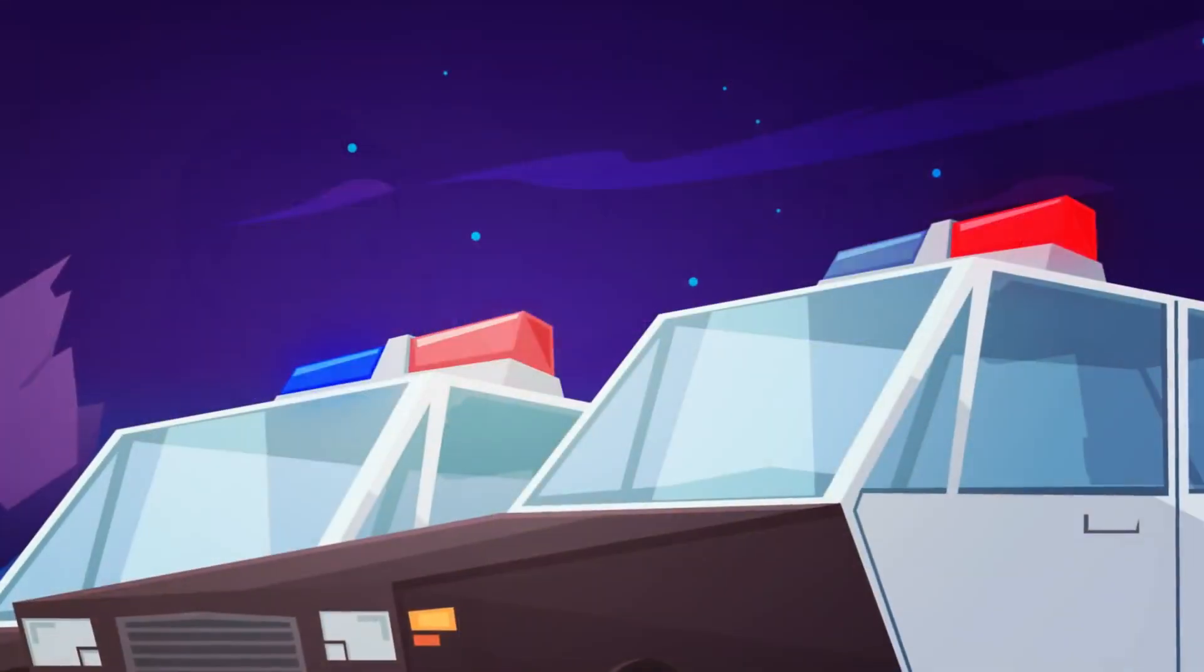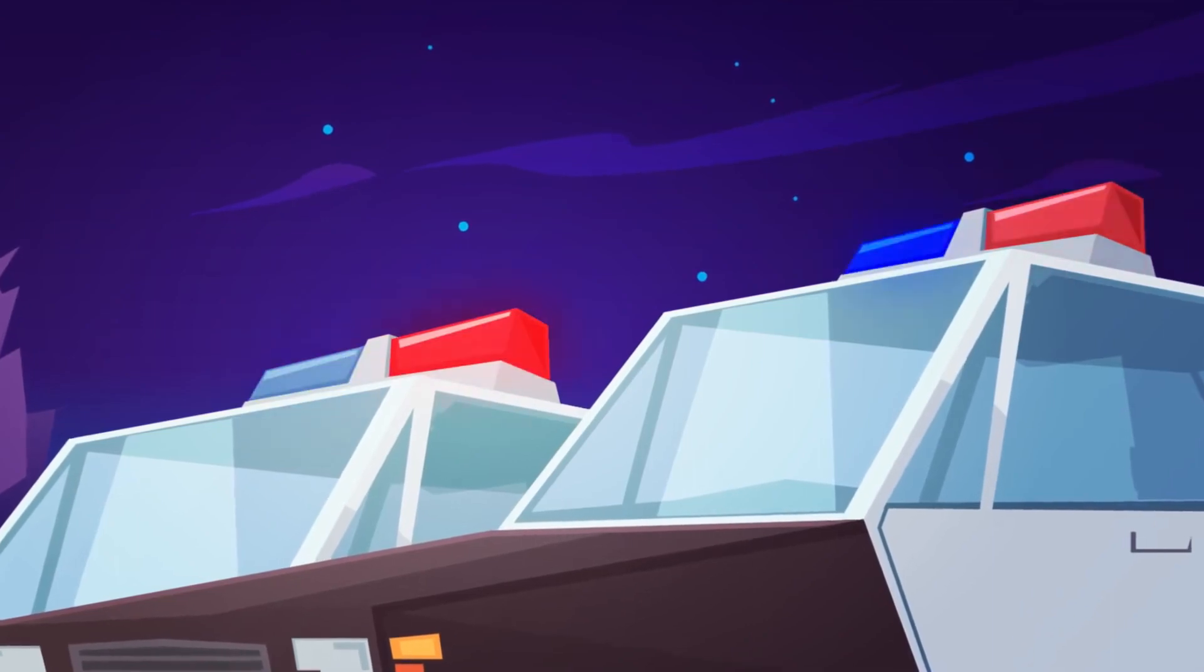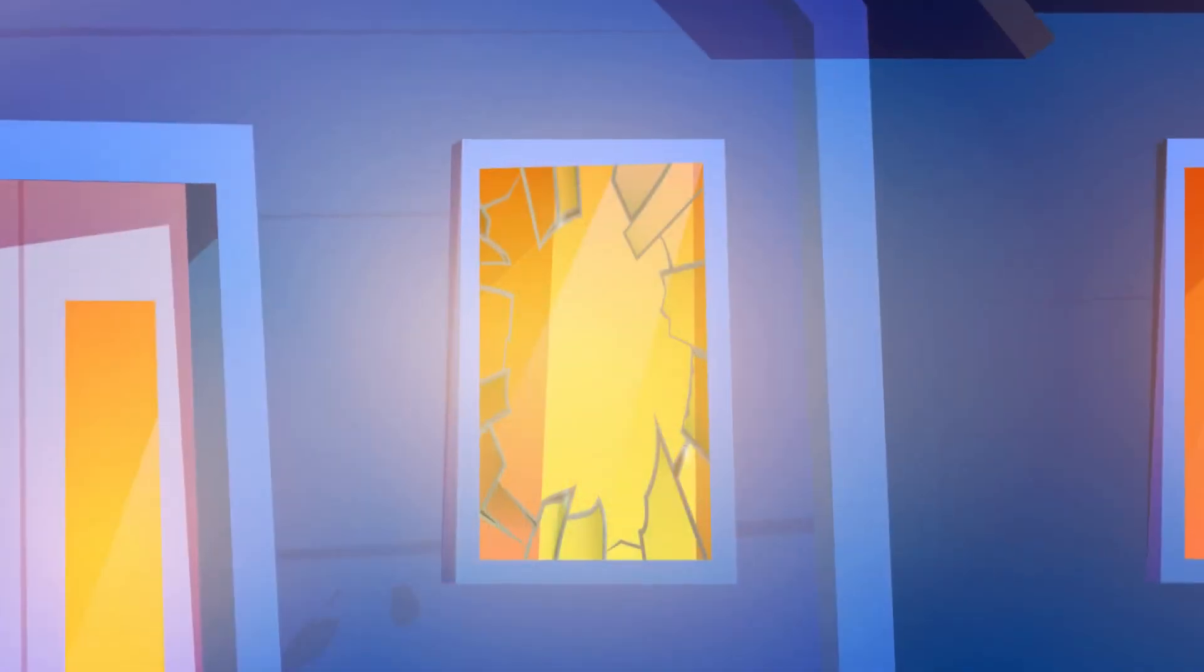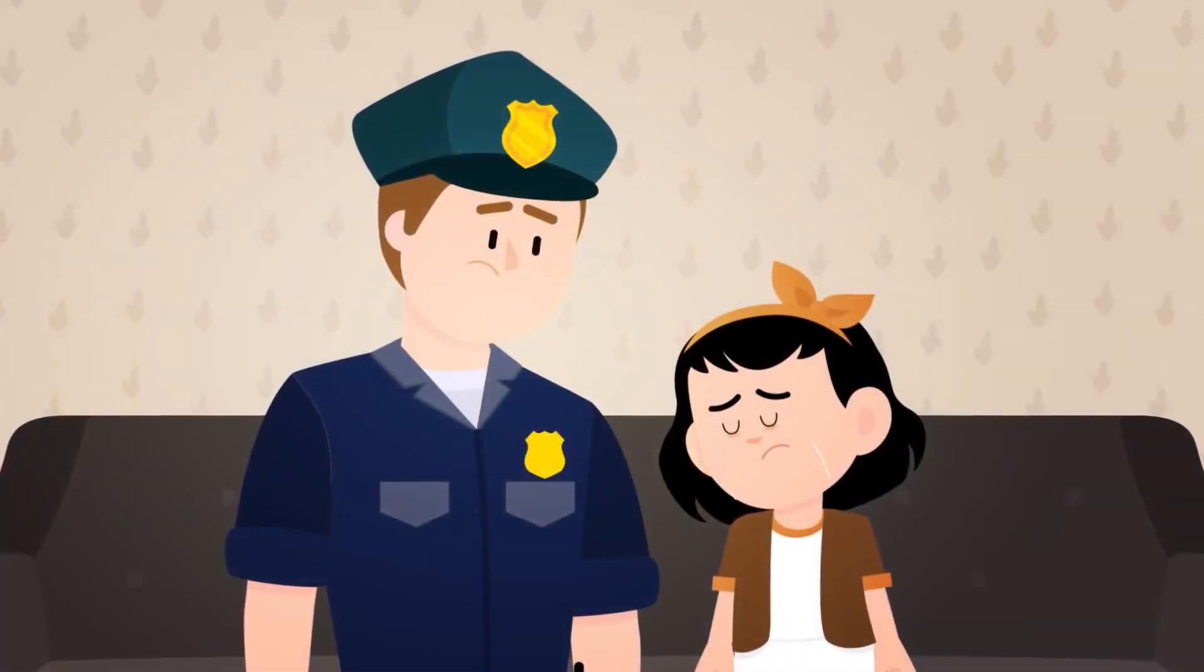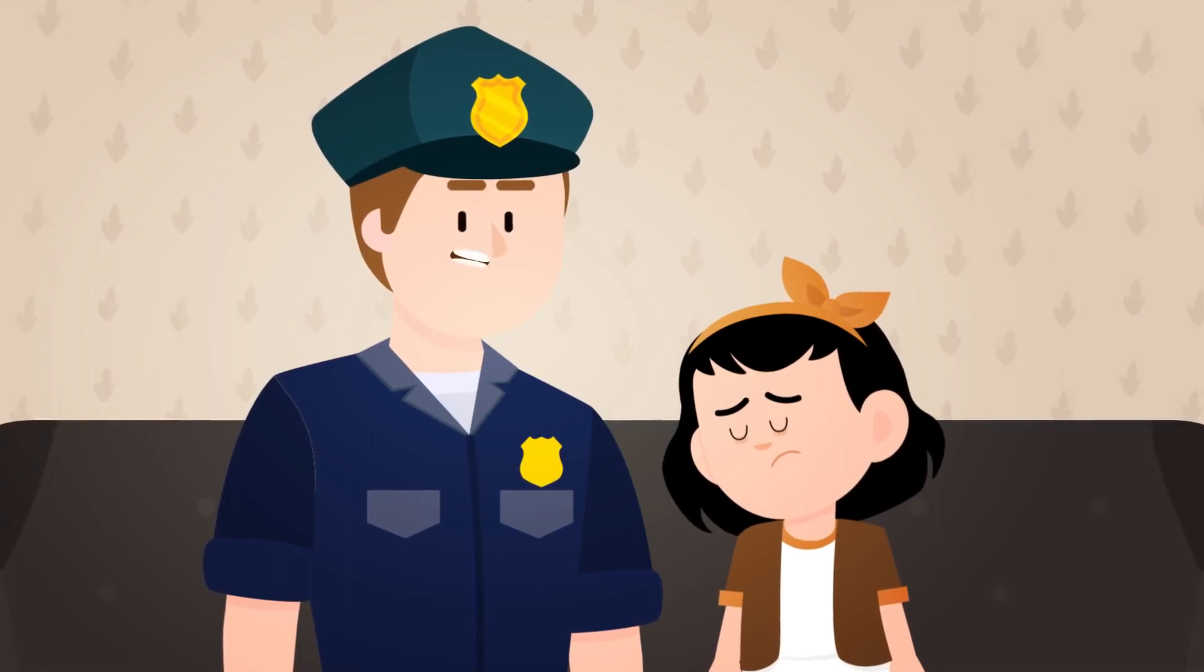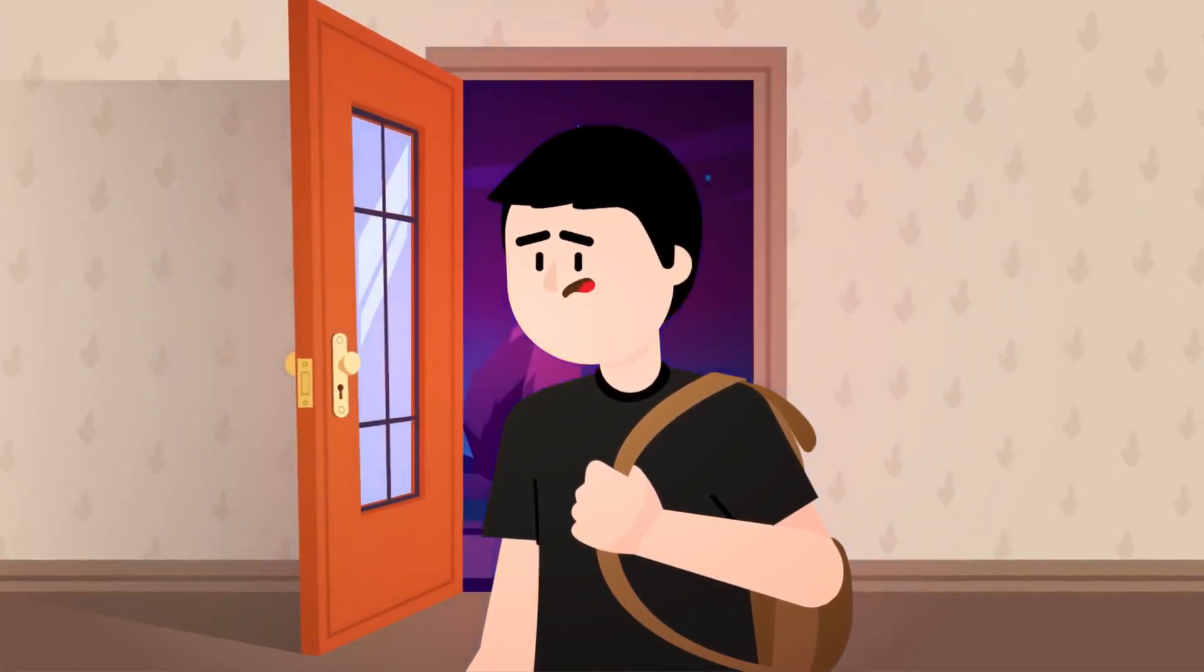But one night after David had been out at a party, he came home to see two police cars in his driveway. As David walked to his house, he noticed that the main window was broken. He walked inside and saw two policemen talking to his little sister, who was crying. Are you David? The policeman said. Yeah, what's going on here? Where's my dad? Son, take a seat.